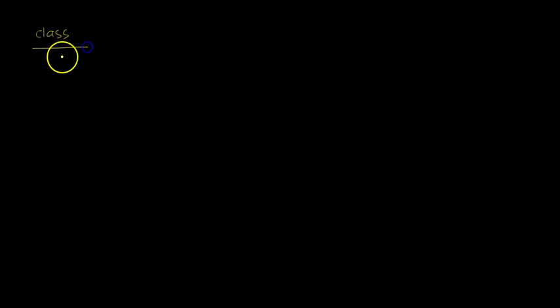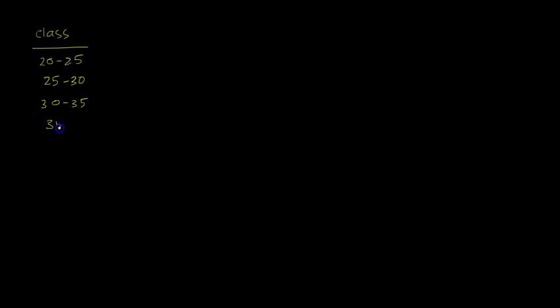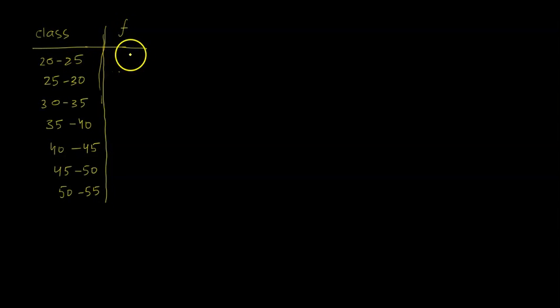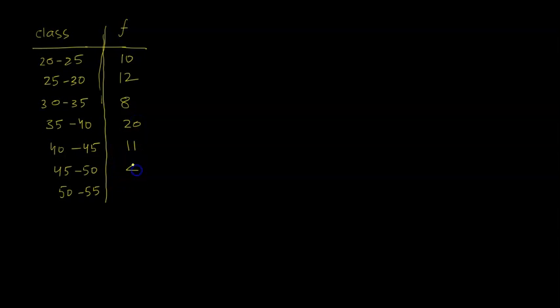Let me go ahead and understand it through one particular example. This is a continuous frequency distribution. The class intervals given are: 20–25, 25–30, 30–35, 35–40, 40–45, 45–50, and 50–55. These are exclusive intervals. The corresponding frequencies are: 10, 12, 8, 20, 11, 4, and 5.